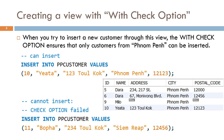When we try to insert a new customer through this view, the WITH CHECK OPTION ensures that only customers from Phnom Penh can be inserted. For example: INSERT INTO PP_customer VALUES (10, 1, 2, 3, 2, 'Cook', 'Phnom Penh', 12123). The inserted row will be inserted into both the view PP_customer and the base table, the customer table.